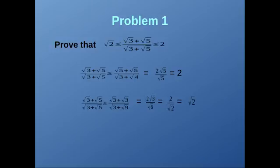Now let's decrease the numerator. For the numerator of √(3 + √5) / (√3 + √5), we decrease it by substituting √5 as √3, giving the numerator as 2√3. We increase the denominator by substituting √5 as √9, giving the denominator as √(3 + 9) = √12. We know that 2√3 / √12 = 2√3 / (2√3) — wait — 2√3 / √6... which simplifies to √2. Hence this statement is proved.